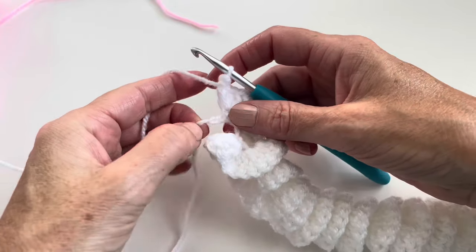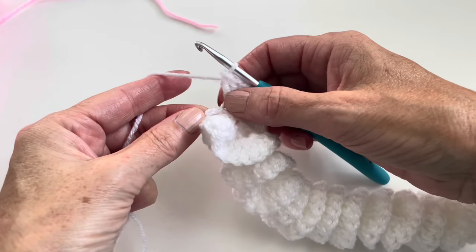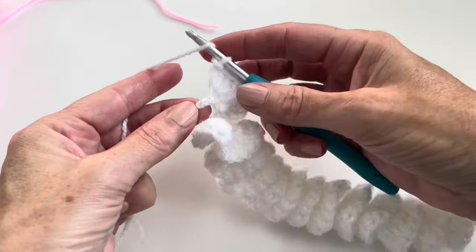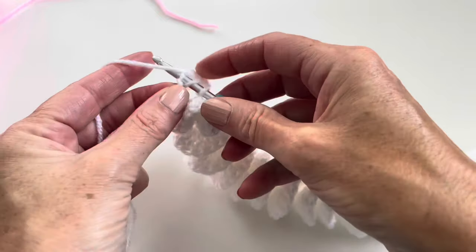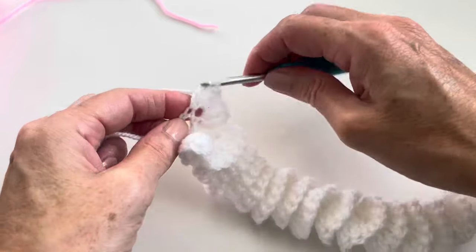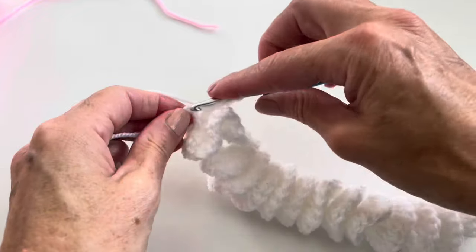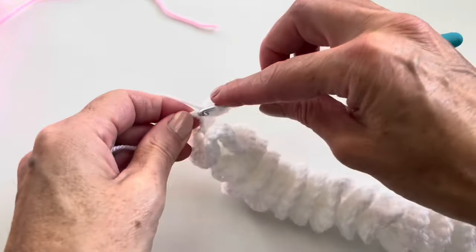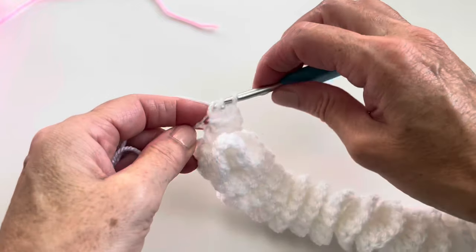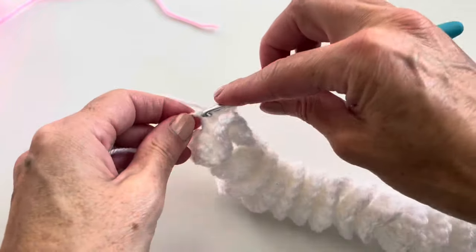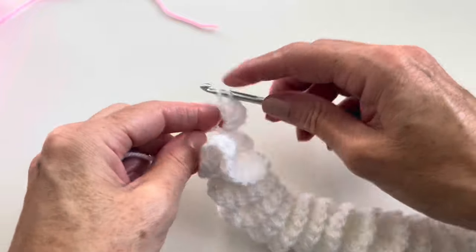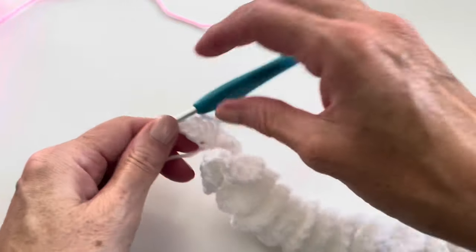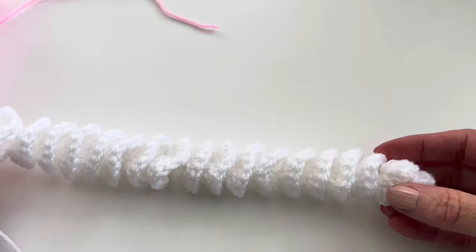I'm at the end and now I have one chain left. So in this chain I will also make four double crochet. And now this is finished.